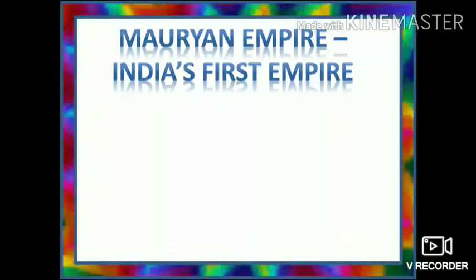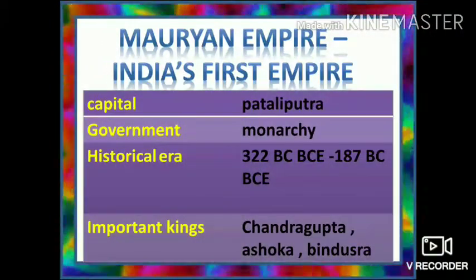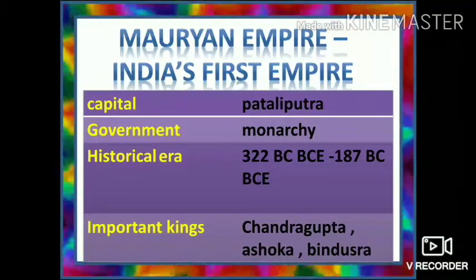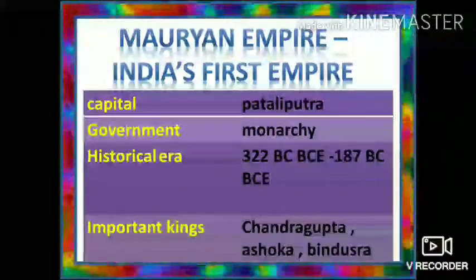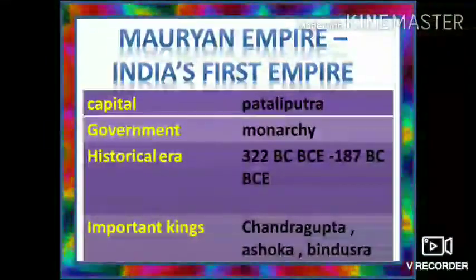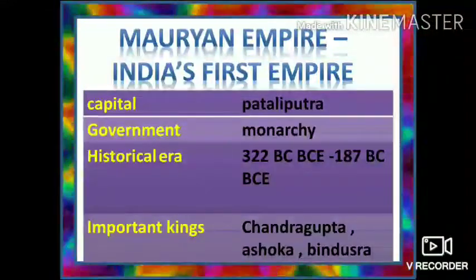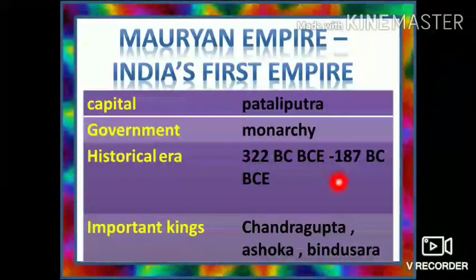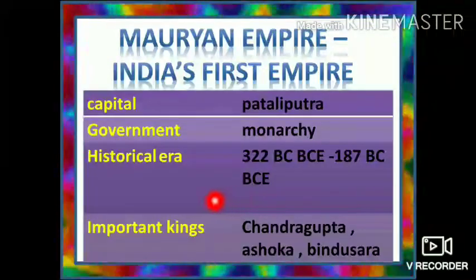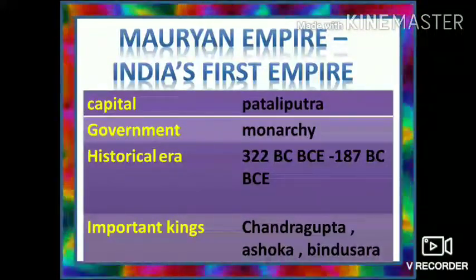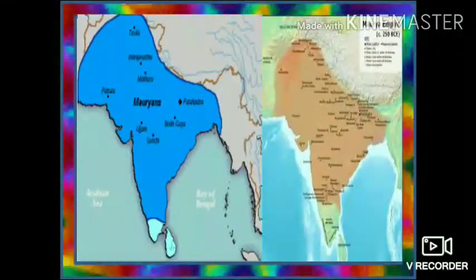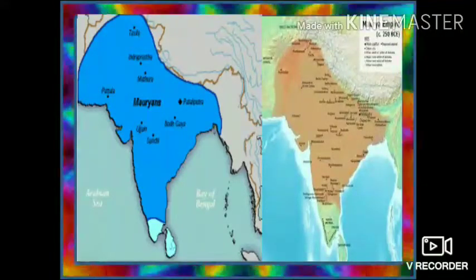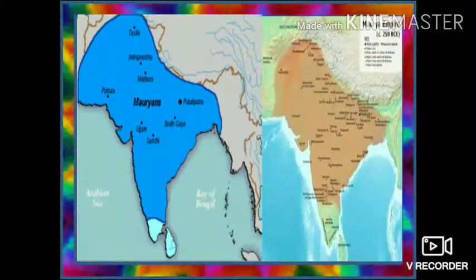The Mauryan Empire was India's first empire. The capital of Mauryan Empire is Pataliputra and the government was a Monarchy, a political system based upon rule of a single person. The historical era spanned 322 BCE to 187 BCE. Important kings were Chandragupta, Ashoka, and Bindusara. The Mauryan Empire was considered the largest in the Indian subcontinent, stretching over 5 million square kilometers during its golden age under Emperor Ashoka.